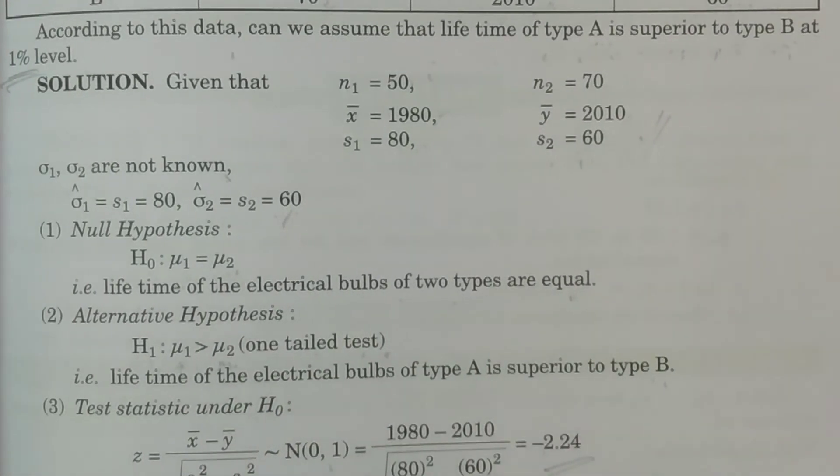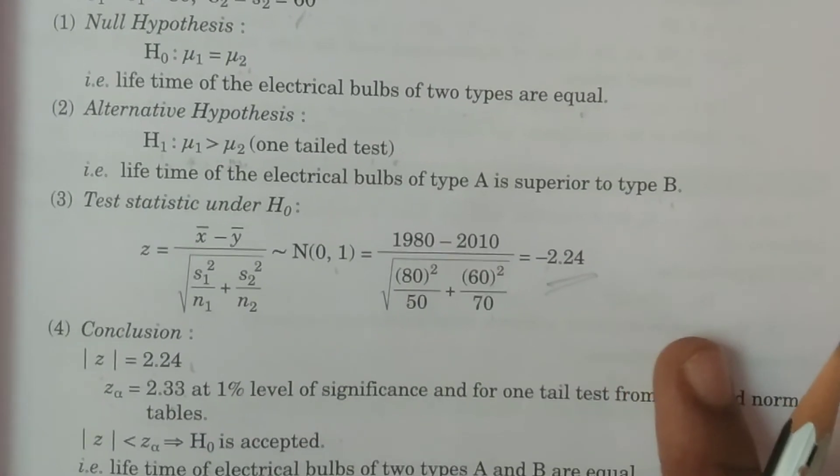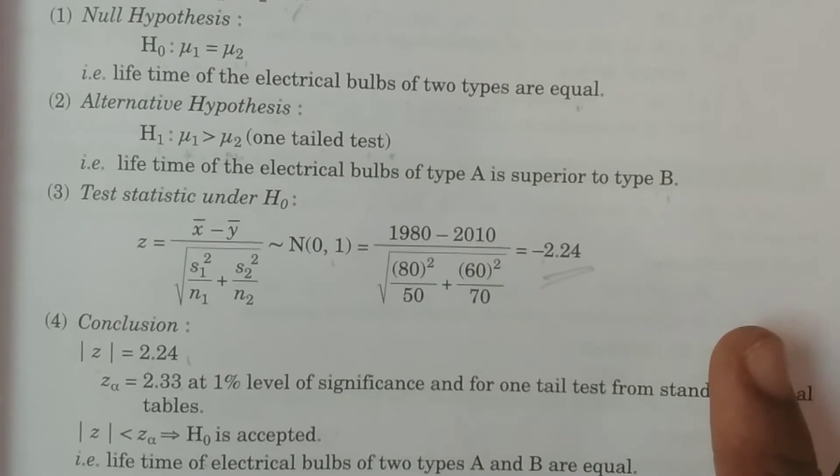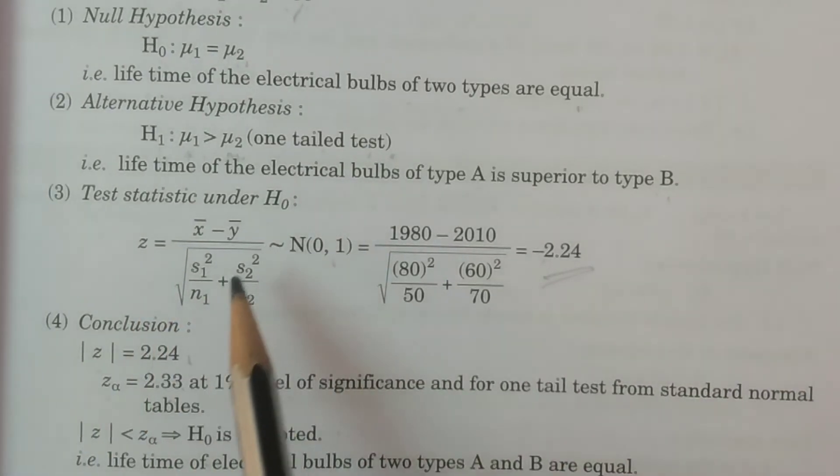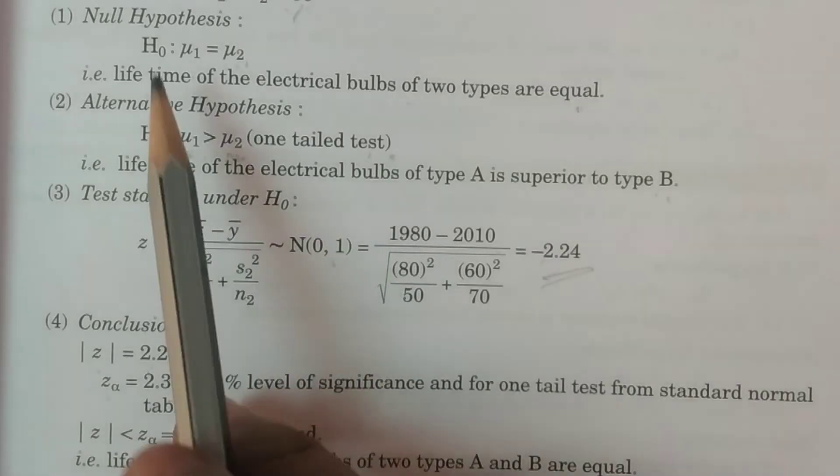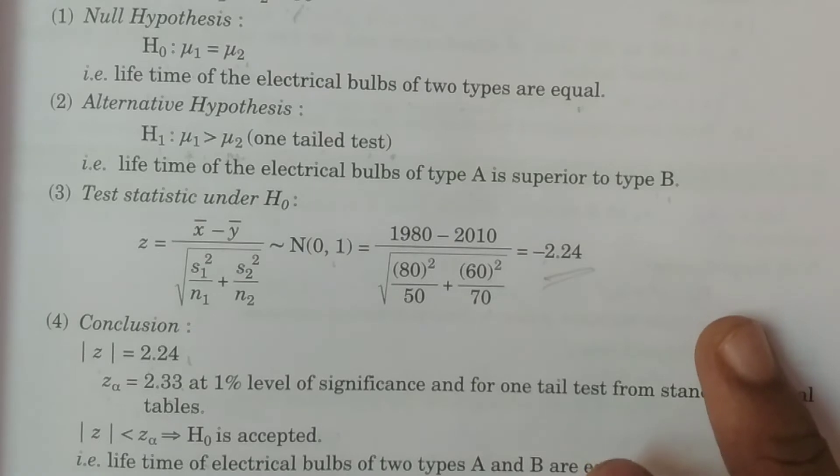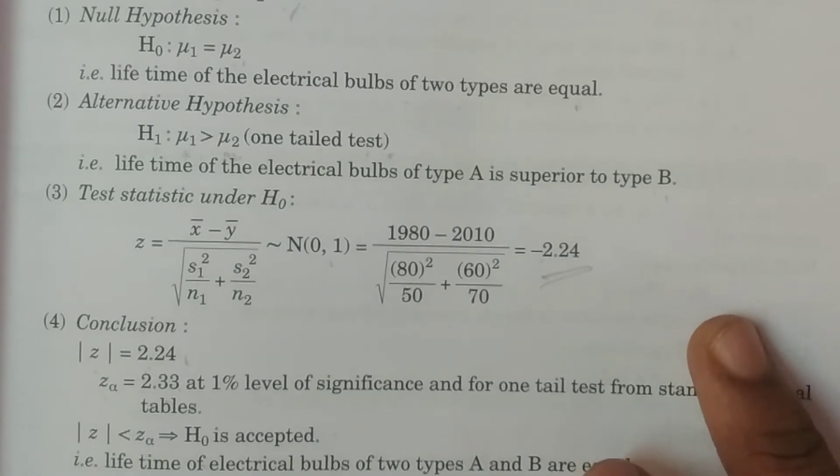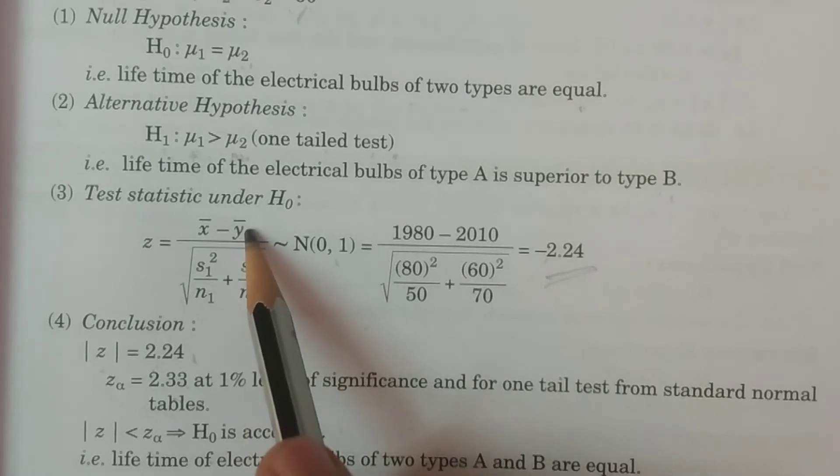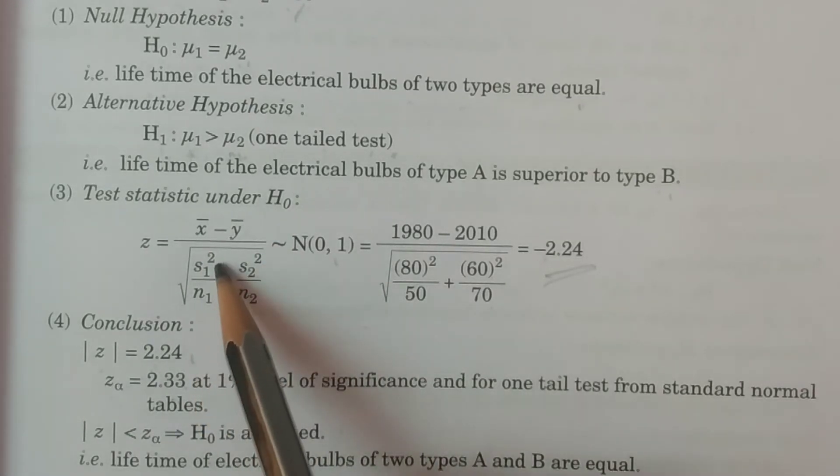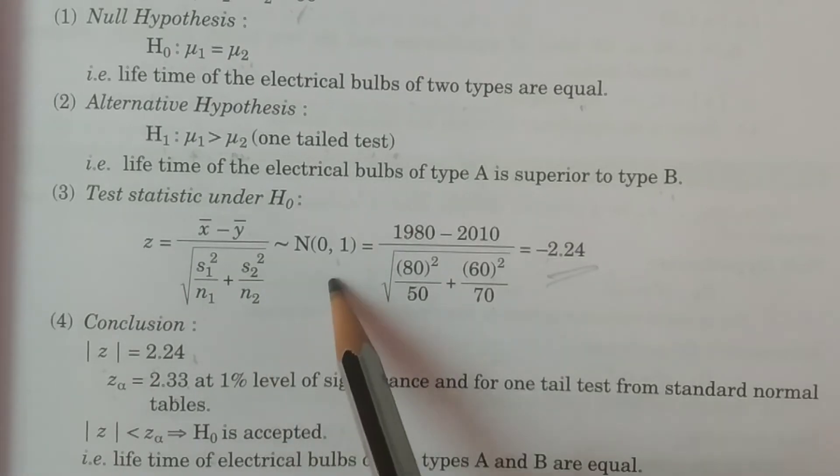We calculate the test statistic. The test statistic is Z value. In this case, sigma1 and sigma2 are not known. The formula is Z equals x bar minus y bar divided by square root of s1 square by n1 plus s2 square by n2. This formula follows N(0,1).